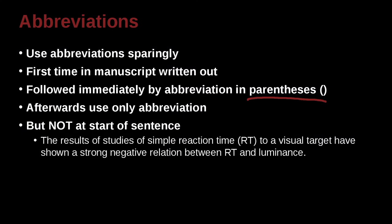Here's an example. The results of studies of simple reaction time (RT) to a visual target have shown a strong negative relation between RT and luminance. So here we have the first time in my paper I've used reaction time. I write the whole thing out. Then inside the parentheses, I give you the abbreviation. Then every time later, I use the abbreviation. Unless, unless what? Unless it's at the beginning of a sentence.